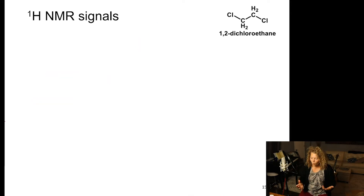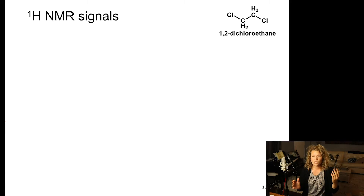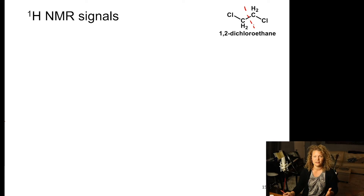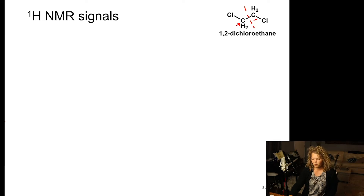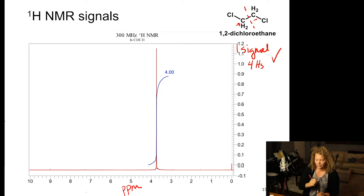Let's look at another example: 1,2-dichloroethane. Pause the video and think about how many signals you expect. This molecule has a plane of symmetry, so the two CH₂ groups have the same chemical environment. Therefore we have just 1 signal with 4 protons. Looking at the spectrum, it indeed has 1 signal with 4 protons — and that's where integration comes in.